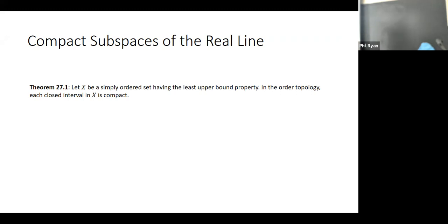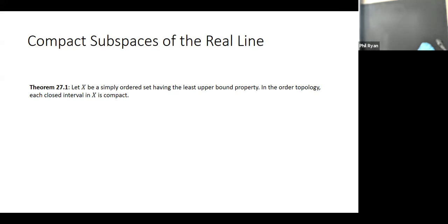Remember when we did connectedness, we just wanted a simply ordered space with the least upper bound property plus the ability to insert an element between any two. Just the fact that you have the least upper bound property means that in the order topology, every closed interval of X is compact.